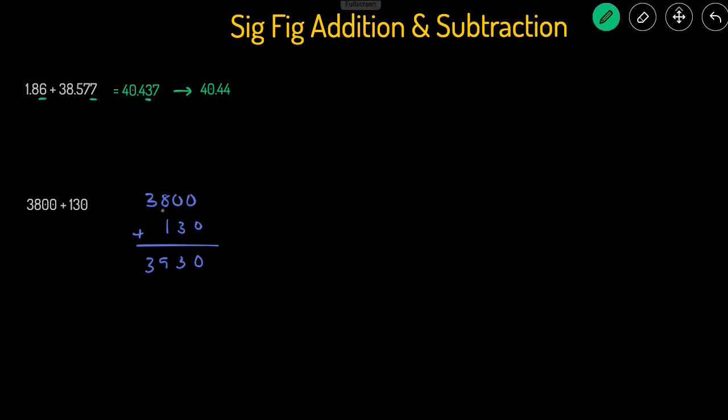So the last sig fig here is actually going to be the 8. These are ending zeros, and ending zeros will only count if there's a decimal point. Since there's no decimal point here, the 8 is the last sig fig. And then in this one, the last sig fig would be just the 3, because this is, again, the ending zero.